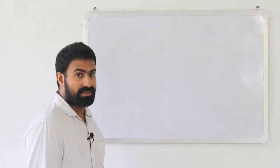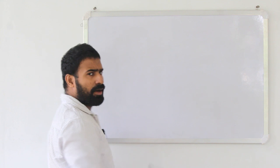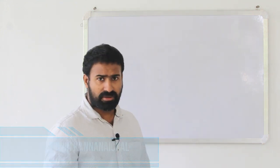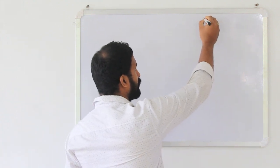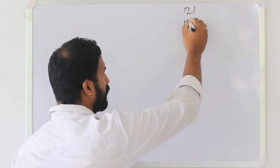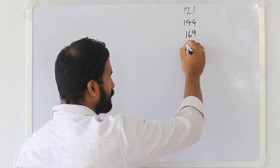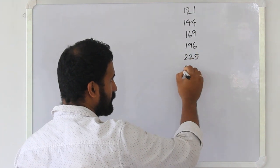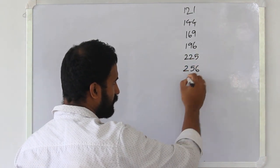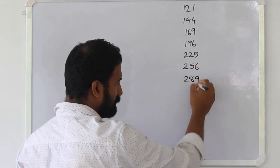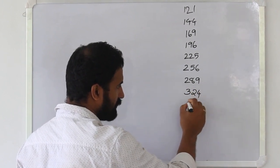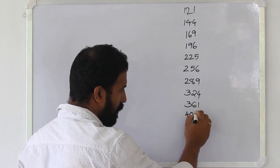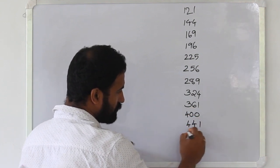Now there are two-digit numbers and squares. We are learning squares up to 32. Here are the squares: 121, 141, 151, 161, 171, 181, 191, 201, 211. Then 22, 23, 24, 25.